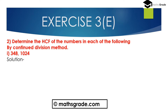Now question number 2: Determine the HCF of the numbers in each of the following by the Continued Division Method. First is 348 and 1024. We have to find the HCF of 348 and 1024 using the Continued Division Method. In the previous question we used the prime factorization method, and now we find the HCF using the Continued Division Method. Since 1024 is the greater number, we divide 1024 by 348.